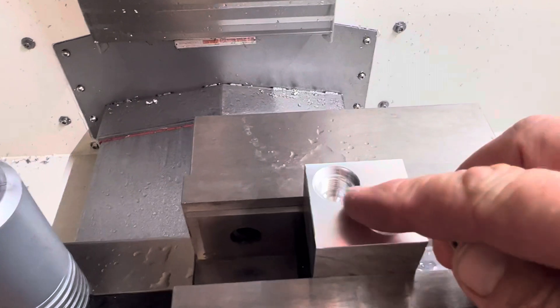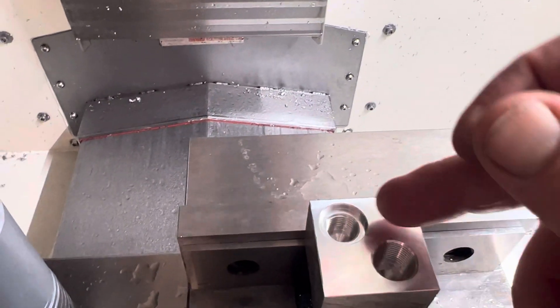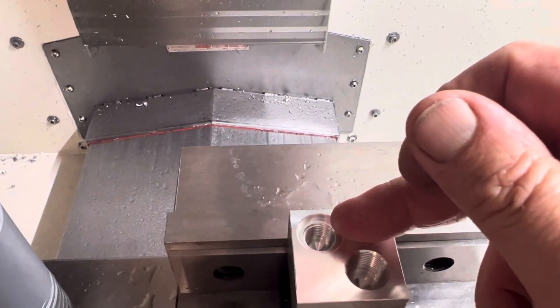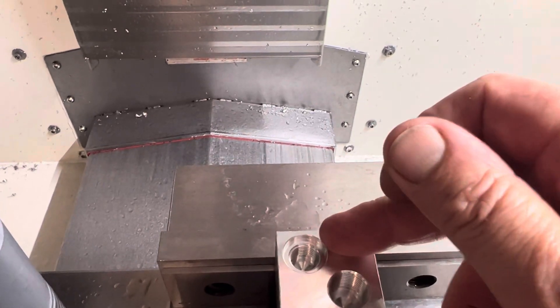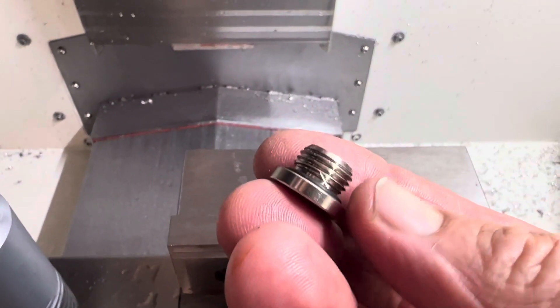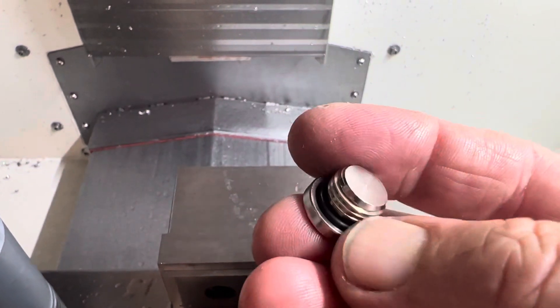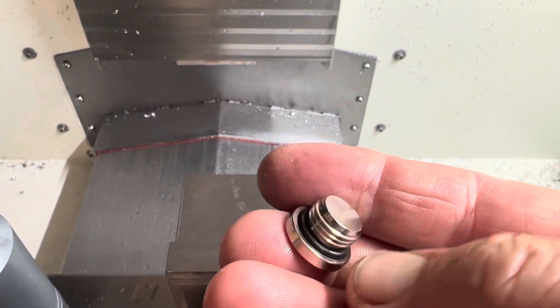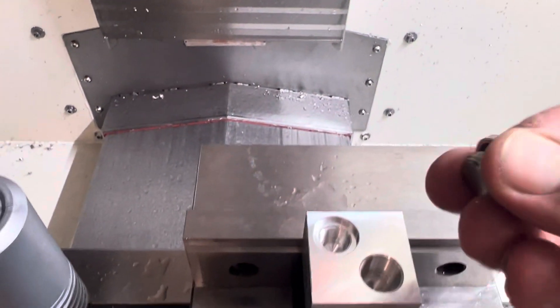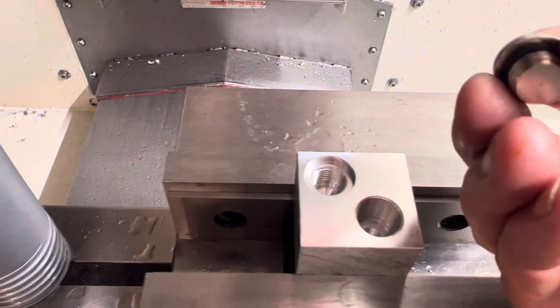And then the quarter inch ones. This is some deep hole drilling I've got to do and then I've got to plug the top of the holes. So I've got these quarter inch plugs which I can just screw in with the O-ring seal on the bottom.